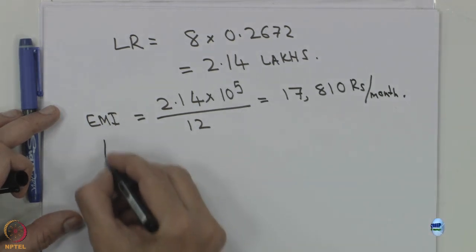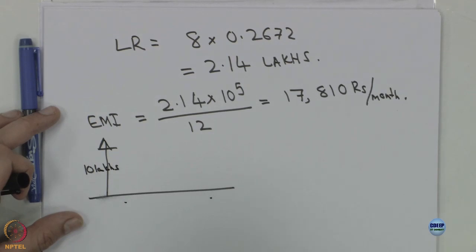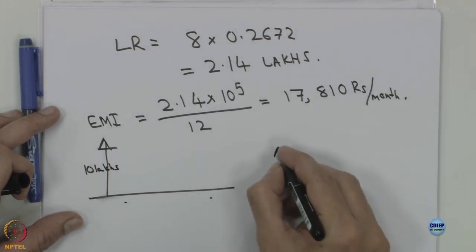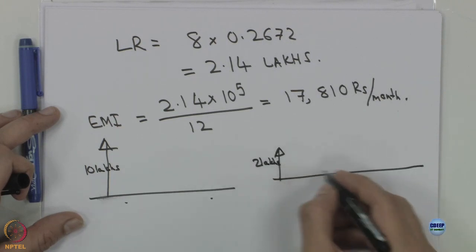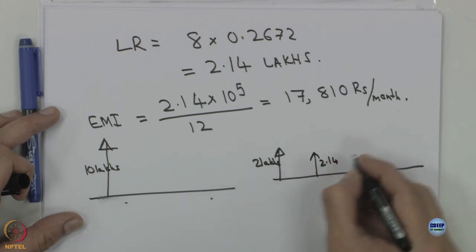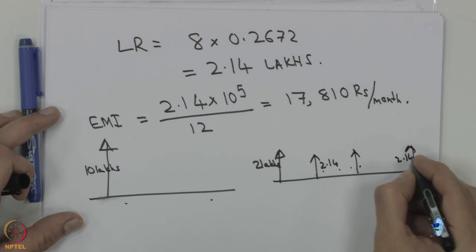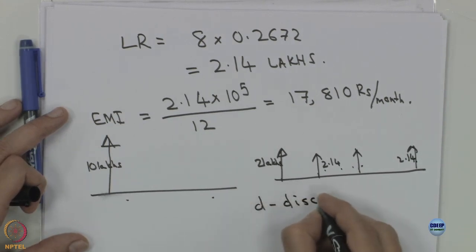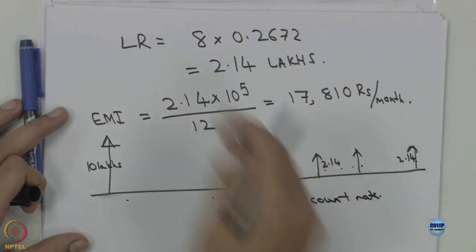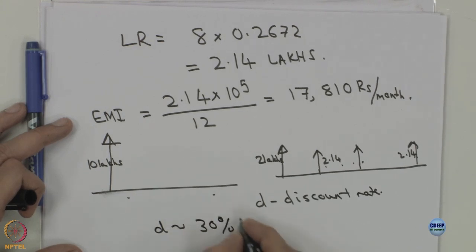The choice is: pay 10 lakhs upfront and nothing else, or pay 2 lakhs upfront and then 2.14 lakhs each year for 5 years. The question of which is preferable depends on your discount rate and your access to capital. Let us compare — suppose the individual has a discount rate of 30 percent.